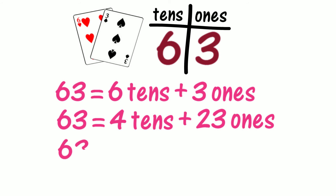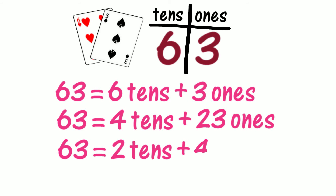Let's imagine that we only have two tens. How many ones will we have? If we see two tens as tens, that means we're seeing four tens as ones. Is four tens forty ones? How many ones will we have? Could we describe 63 using non-standard place value as two tens and forty-three ones?